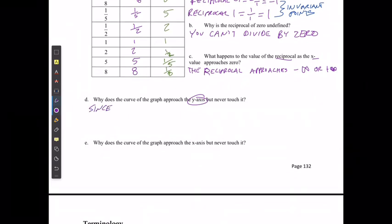Well, since x equals 0 is an NPV, or non-permissible value, there is no value for y equals 1 over f of 0.